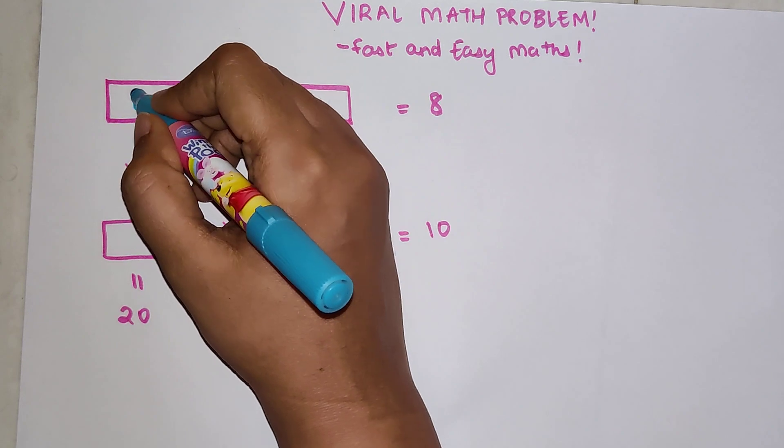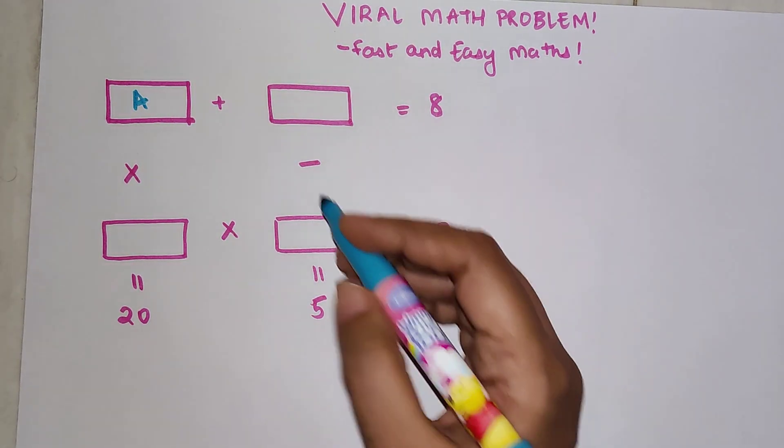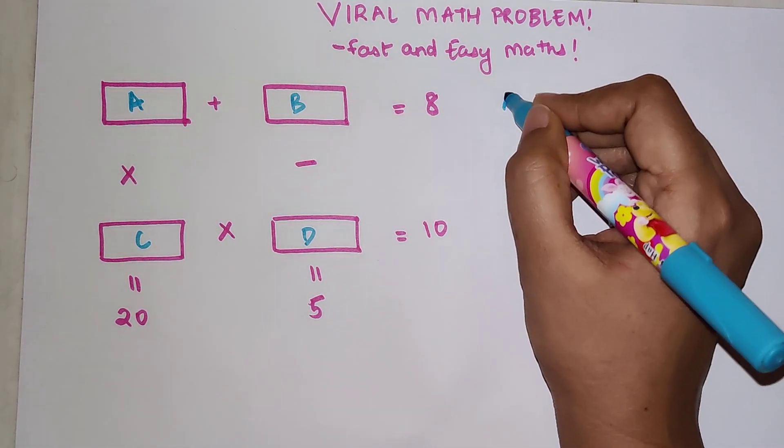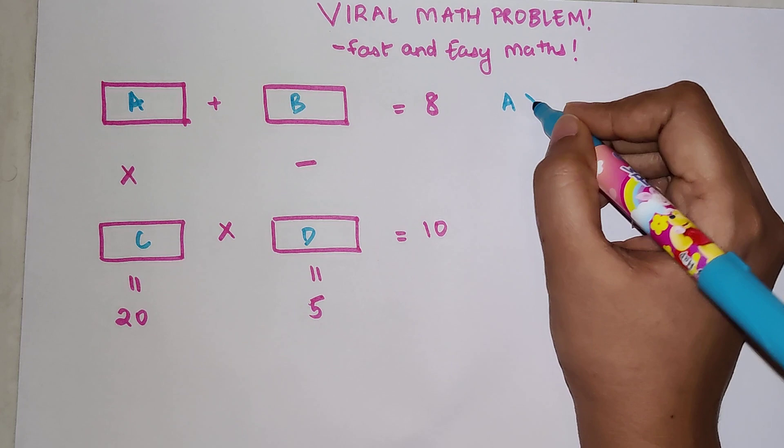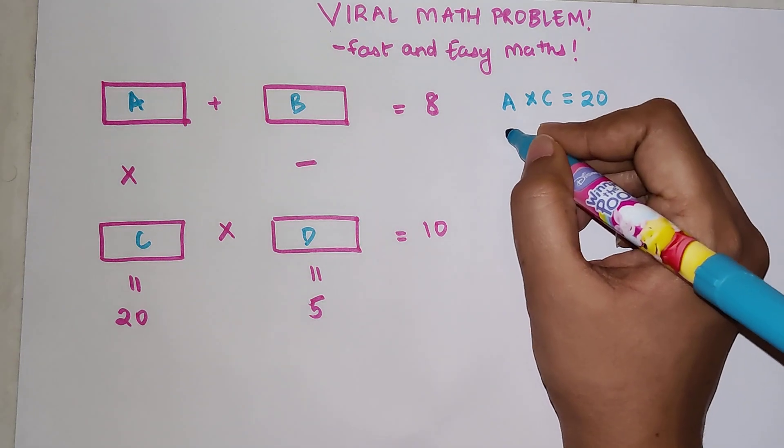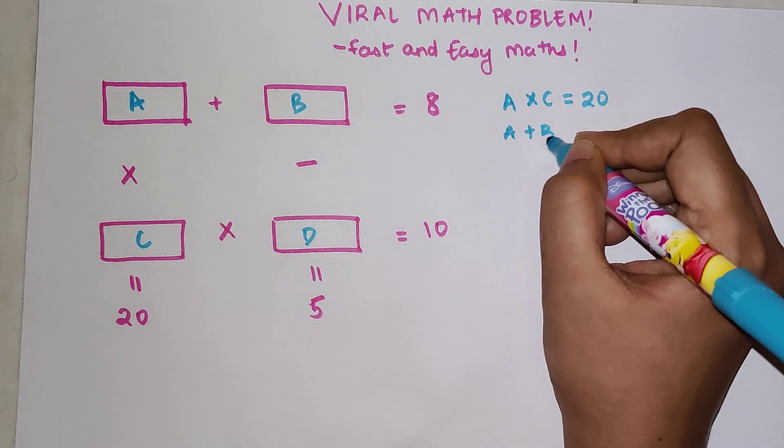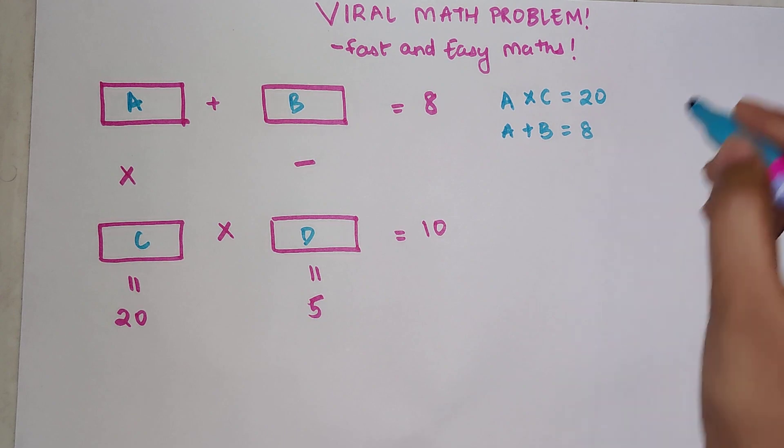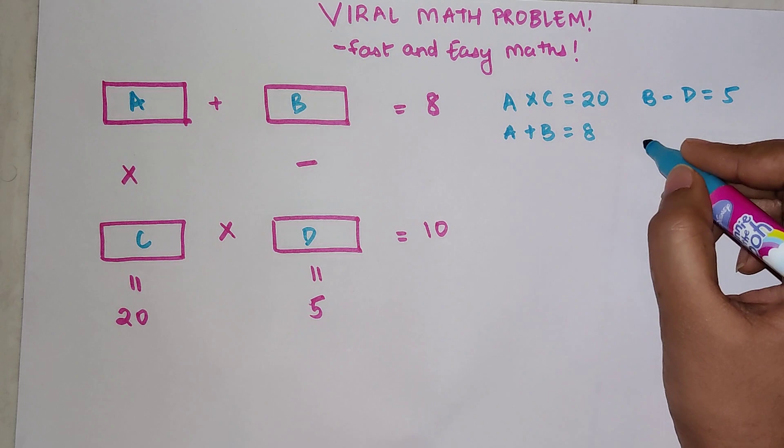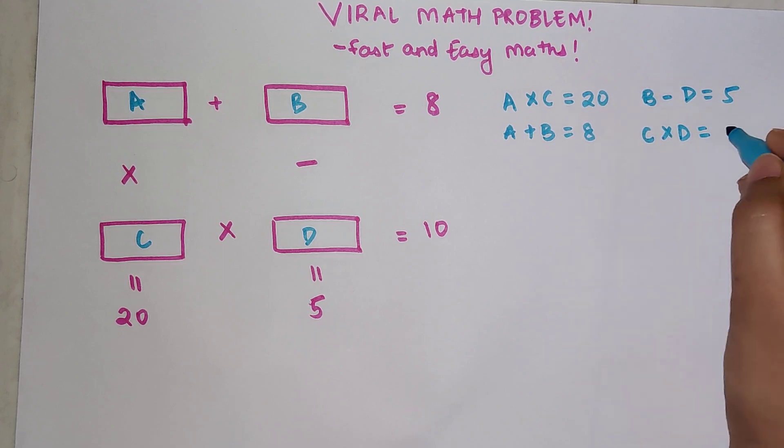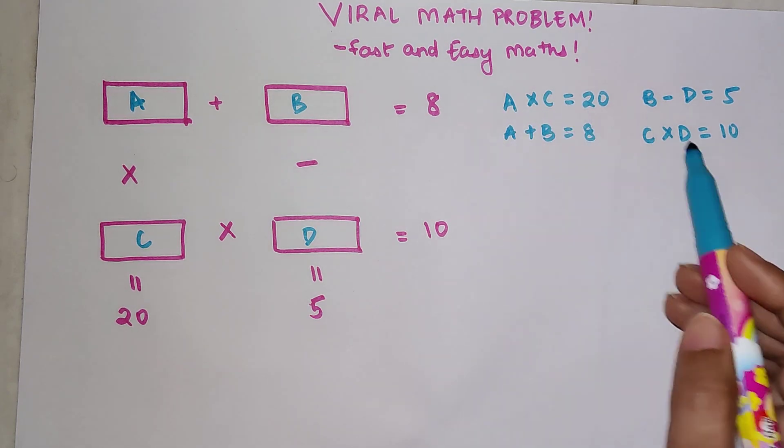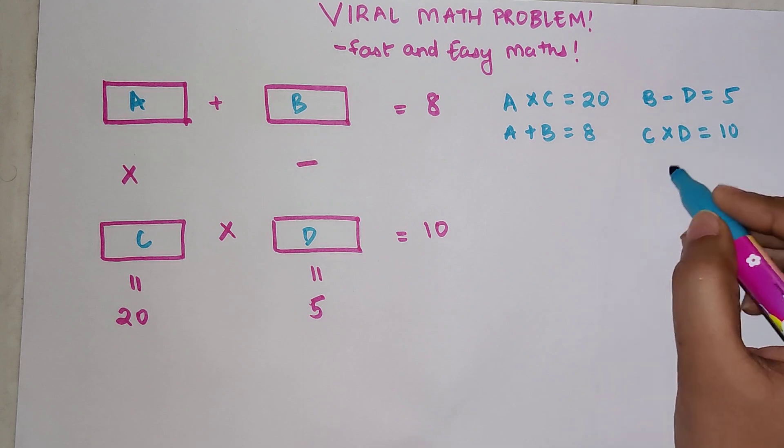Here we are going to use the logic of algebra. So I can say that A times C gets me 20. Similarly, we can say that A plus B gets you 8. Here I can say B minus D is getting you 5, and C times D is getting you 10. Now if you look over here, there is a relation between A and C, and C and D.